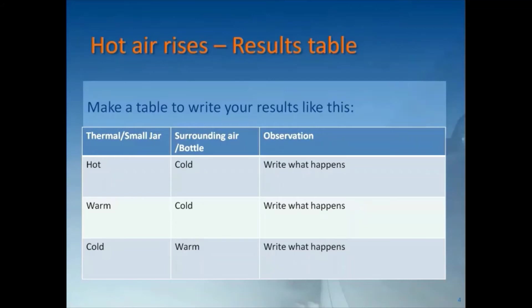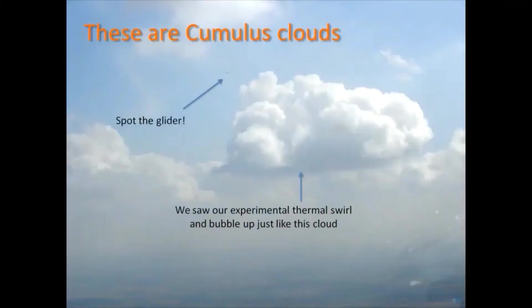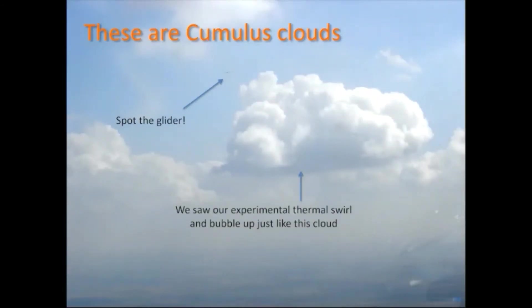Now you've modelled cumulus forming, let's have a look at some in real life. Here are some cumulus clouds — and look, here's a glider in this one, can you see it? If you look at this quite big cumulus, you can see all the swirl and bubble in it. That's what we saw with our experiment — it bubbled gently up and swirled around a bit. Well, that's what happens in real life too.